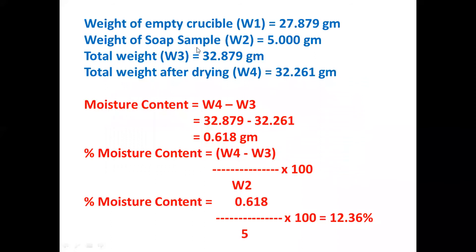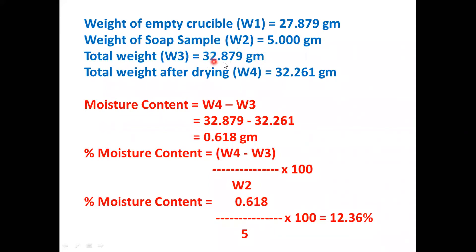The weight of empty crucible, that is W1, was 27.879 grams. We have measured 5 grams of soap sample for the experiment. The total weight of crucible and soap sample was 32.879 grams. After drying, the recorded weight of crucible and soap sample is 32.261 grams.